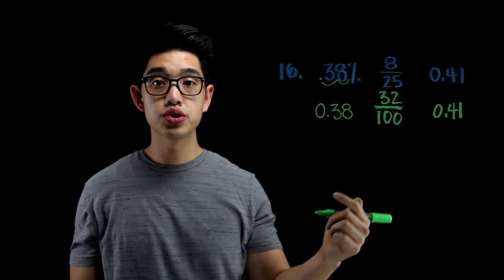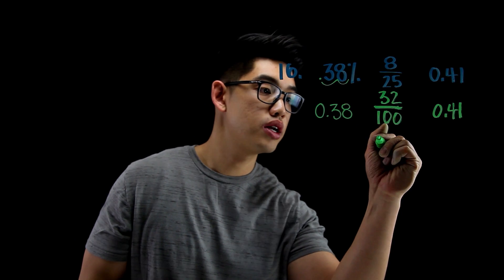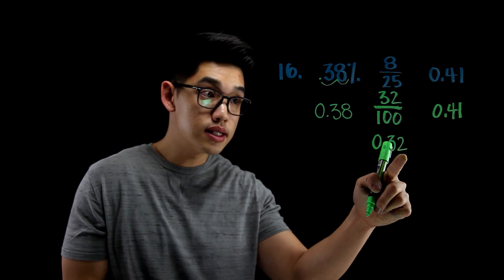Now, 32 over 100, that's the same thing as 32 hundredths. You're going to say 0.32. That's 32 hundredths.